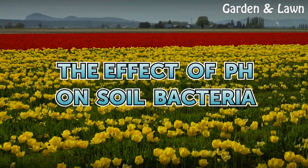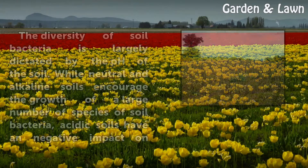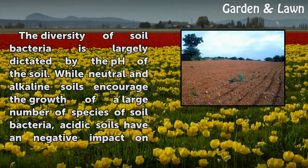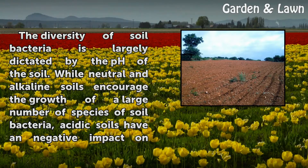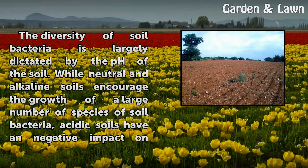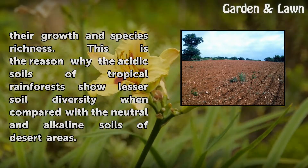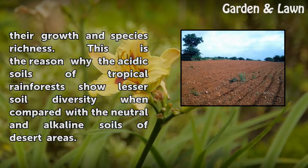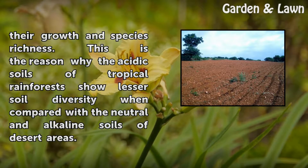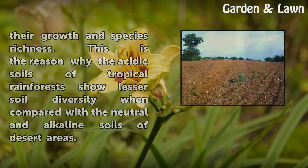The effect of pH on soil bacteria. The diversity of soil bacteria is largely dictated by the pH of the soil. While neutral and alkaline soils encourage the growth of a large number of species of soil bacteria, acidic soils have a negative impact on their growth and species richness. This is the reason why the acidic soils of tropical rainforests show lesser soil diversity when compared with the neutral and alkaline soils of desert areas.